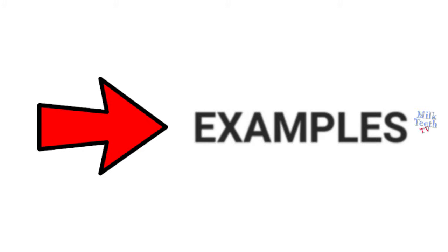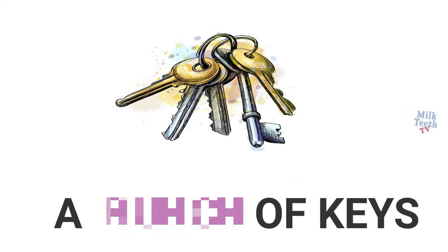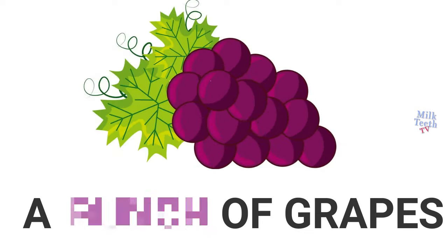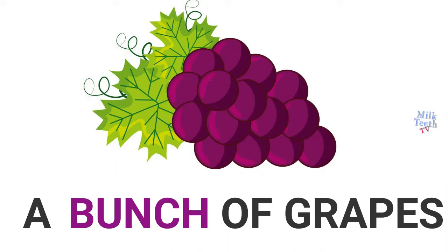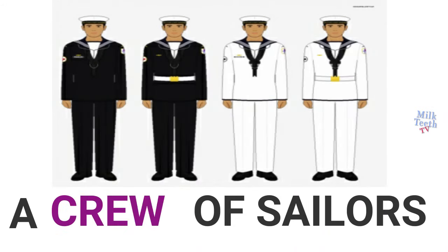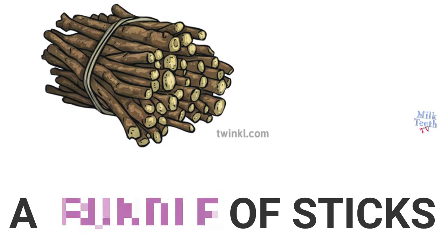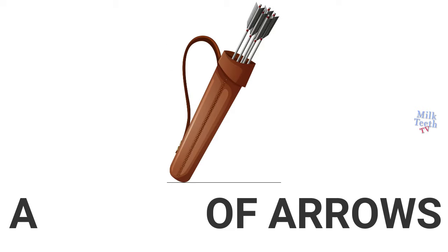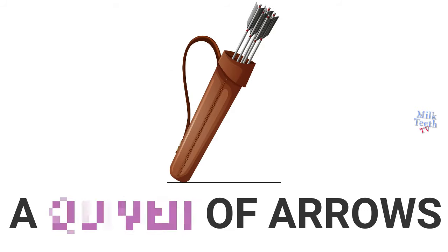Let's take a few examples. A bunch of keys, a bunch of grapes. A group of sailors is a crew of sailors, a bundle of sticks, a quiver of arrows.